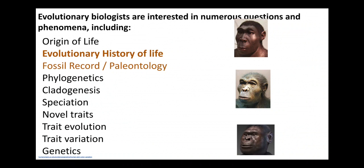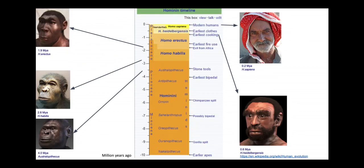A question studied by many evolutionary biologists and evolutionary anthropologists is how did life evolve over time? How did previous species get replaced by the current species we see today? Often we use the fossil record and paleontology in order to address these questions, and this is especially important for the study of human origins and how humans emerged from ancestors that were ape-like. We can use paleontology and the fossil record to examine how over approximately 10 or more million years humans evolved from previous species.